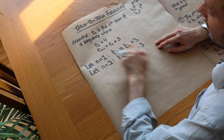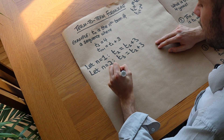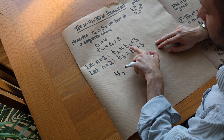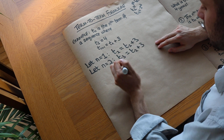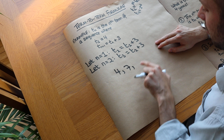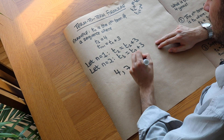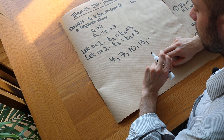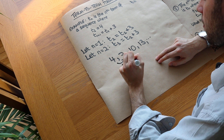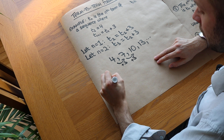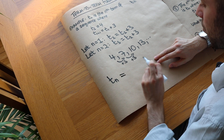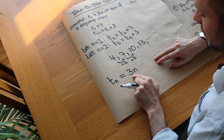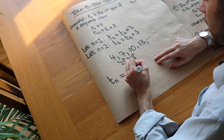In this particular case, if the first term is four, then the second term is four plus three which is seven. Then the third term is the second term seven plus three, and you can see it's adding three each time. Now we can also find a position-to-term formula: since we're adding three each time, tn equals three n. Three n gives the three times table where the first term is three, but we actually want four, so we adjust to tn equals three n plus one.